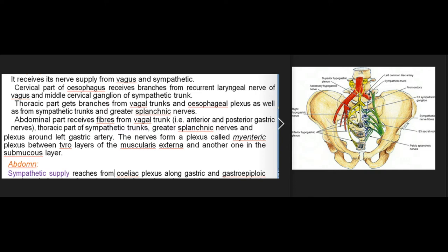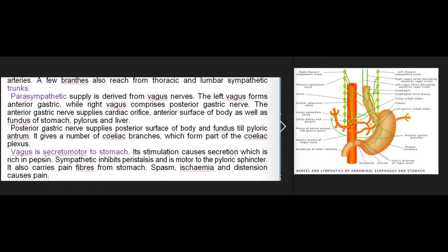The nerves form a myenteric plexus between the layers of the muscularis externa and another in the submucous layer. Stomach: sympathetic supply reaches from the coeliac plexus along the gastric and gastroepiploic arteries; a few branches also reach from thoracic and lumbar sympathetic trunks. Parasympathetic supply is derived from the vagus nerves — the left vagus forms the anterior gastric nerve, while the right vagus comprises the posterior gastric nerve. The anterior gastric nerve supplies the cardiac orifice, anterior surface of body and fundus of stomach, pylorus, and liver. The posterior gastric nerve supplies the posterior surface of the body and fundus till the pyloric antrum, and gives coeliac branches forming part of the coeliac plexus. Vagus is secretomotor to the stomach; its stimulation causes secretion rich in pepsin. Sympathetic inhibits peristalsis and is motor to the pyloric sphincter; it also carries pain fibers from the stomach. Spasm, ischemia, and distension cause pain.